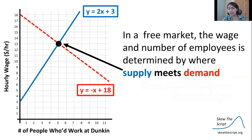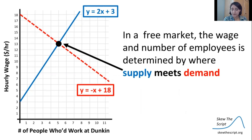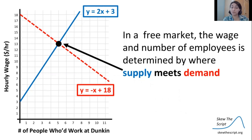Now in a free market — meaning there's no interference in the economy, no restrictions being placed on it — the number of people who are going to end up employed is going to be determined by where these lines meet: where the labor supply curve meets the labor demand curve. That intersection point is considered our equilibrium number of people that are going to be employed. So let's go ahead and solve our system of equations in order to figure out what that equilibrium would be.